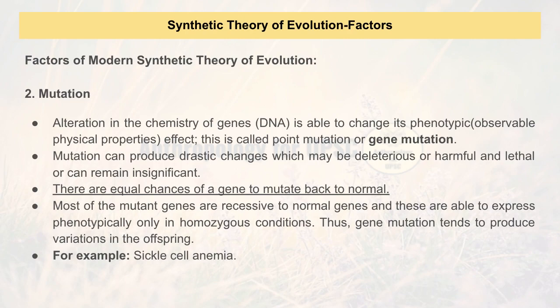The second factor is mutation — the alteration in DNA. This alteration is reversible; it can be changed. There are different reasons and types of mutations. One is gene mutation: changes in genes that you get to see in physical characteristics. A famous example is sickle cell anemia, where RBCs (blood cells), which are generally round-shaped, turn into a sickle shape because of the gene mutation process.